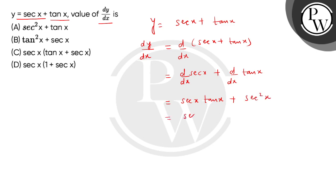Now we will factor out sec x. So inside the bracket will be tan x plus sec x. This is the final answer for dy/dx. So guys, the correct answer will be option number C. Thank you.